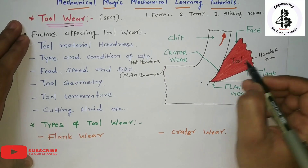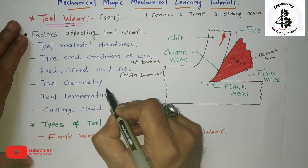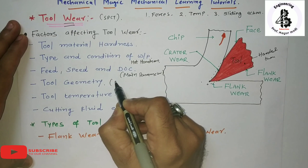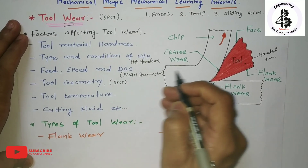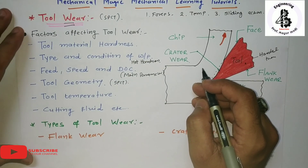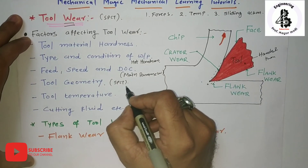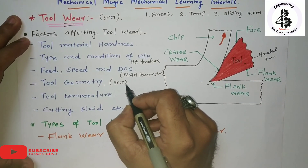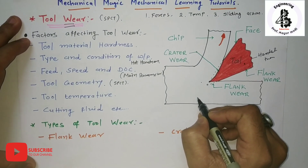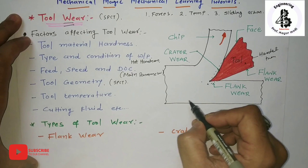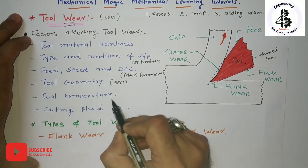Another important factor is tool geometry. For single point cutting tools, there are various angles like rake angle and side rake angle. You can adjust the tool geometry according to the characteristics of the workpiece material so you can easily control tool wear.